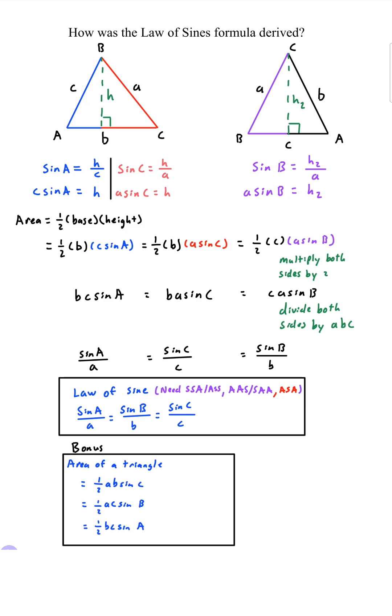As a bonus we can find the area of a triangle one half ab sine of C one half ac sine of B and one half bc sine of A. Thank you.